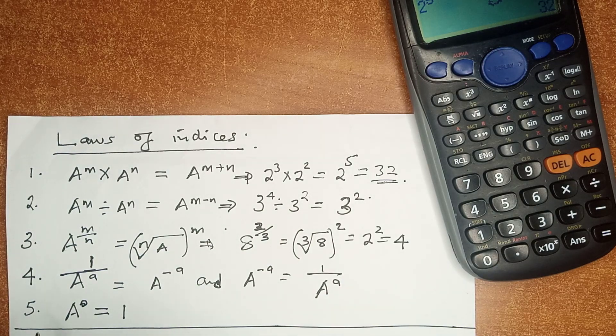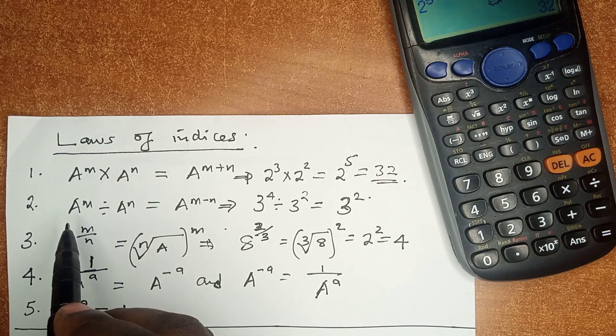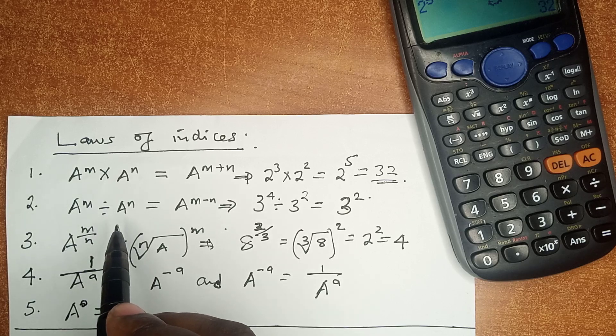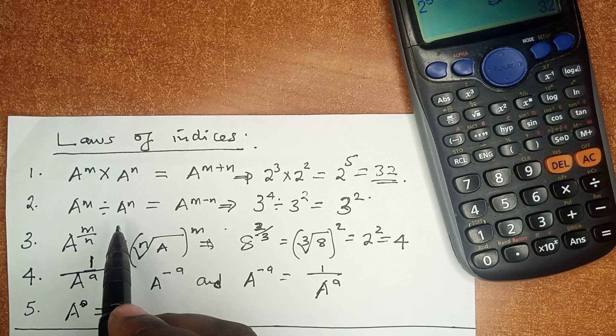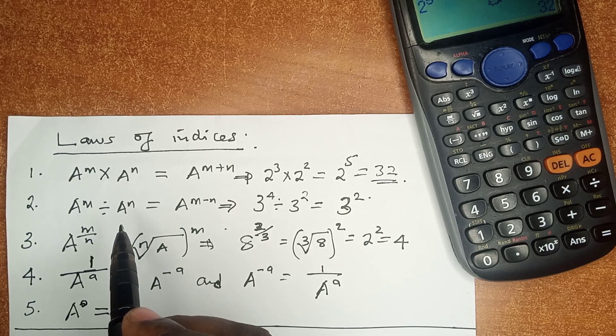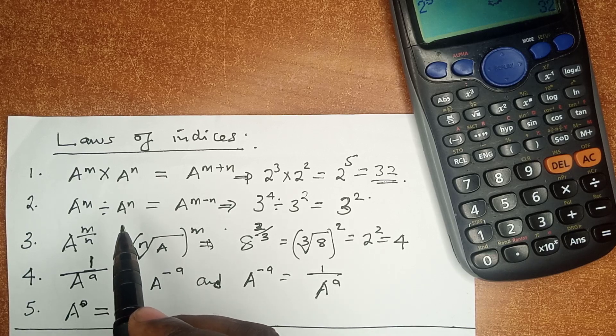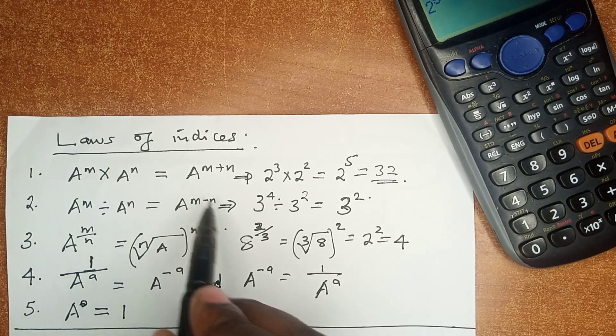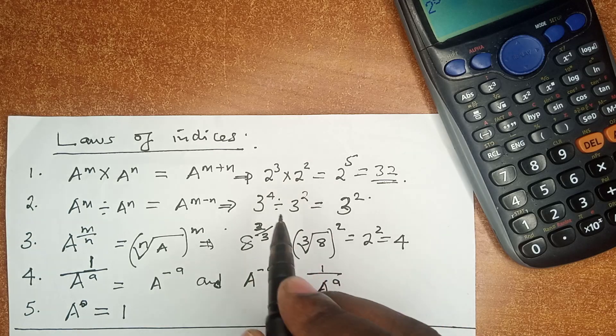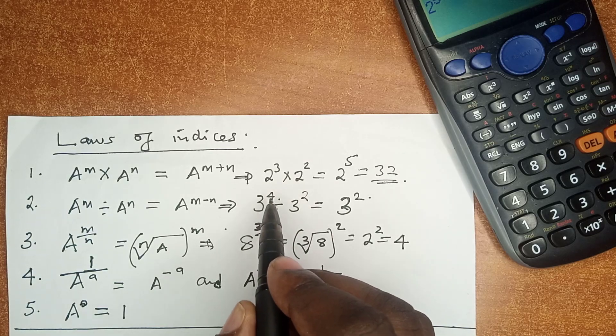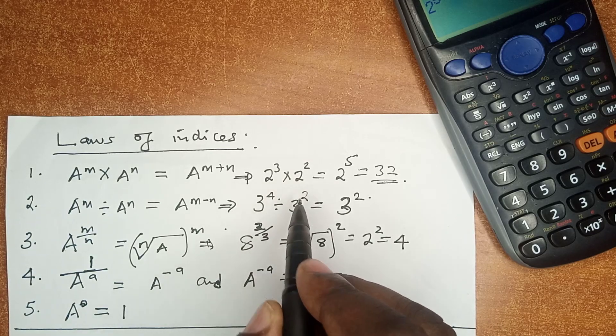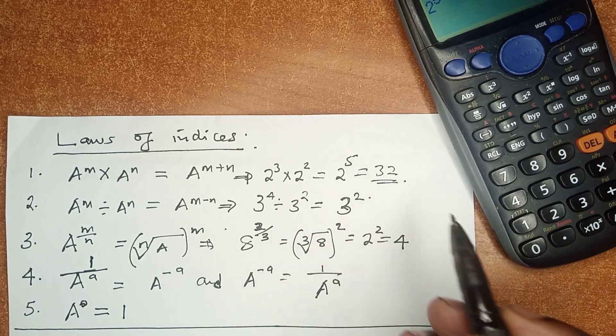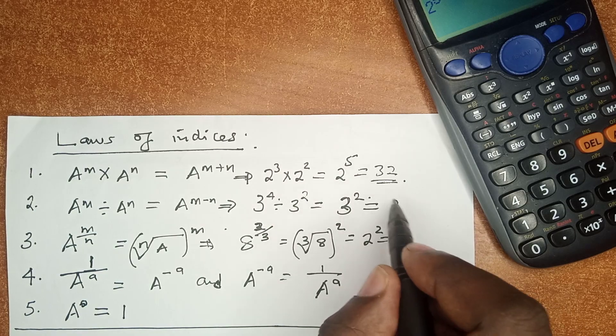The second law of indices: if the same number a raised to power m is divided by the same number, but this time raised to power n, equals the same number a raised to power m minus n, the difference between the indices. For example, if we have 3 raised to power 4 divided by 3 raised to power 2, then we have 3 raised to power 4 minus 2 which is 2. This is, of course, 9.